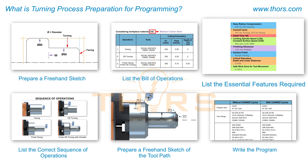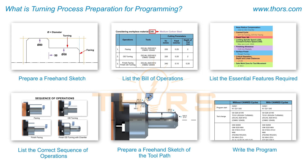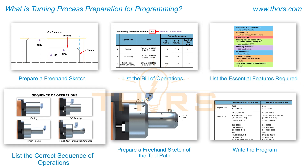Step 3: List the essential features required for each individual operation, such as nose radius compensation, surface finish requirements, dwell time, canned cycles, and other requirements. Step 4: List out the correct sequence of operations to be performed.